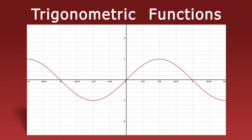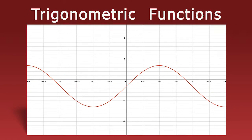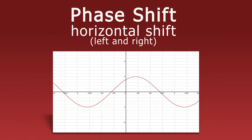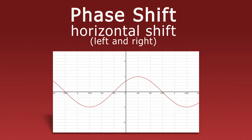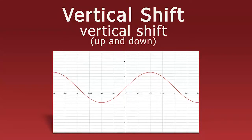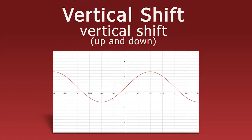Each function has a basic graph. However, we can shift these basic graphs upwards, downwards, left, and right. A phase shift identifies the horizontal shift of a function. A vertical shift refers to the vertical, up and down, shift of a function.